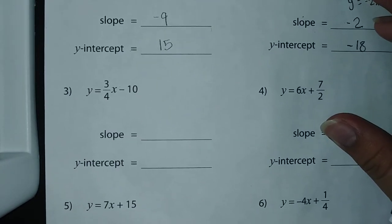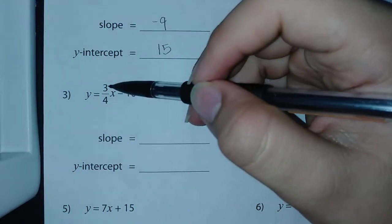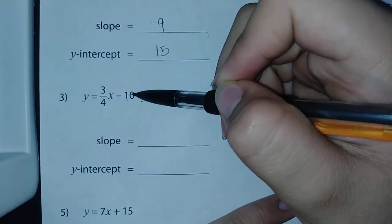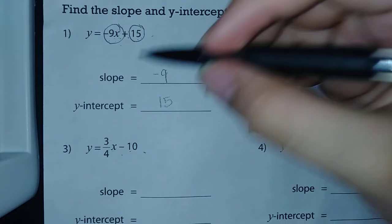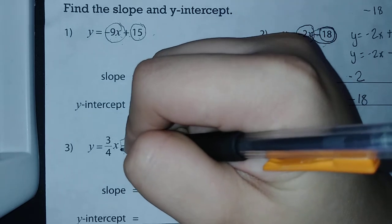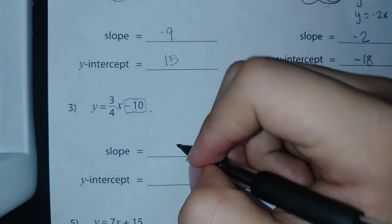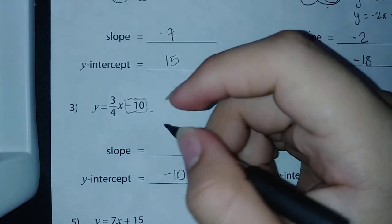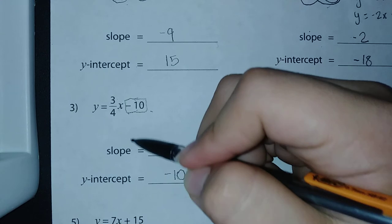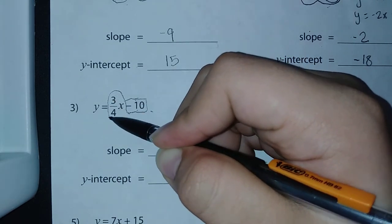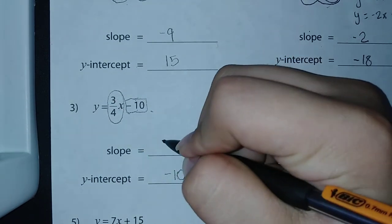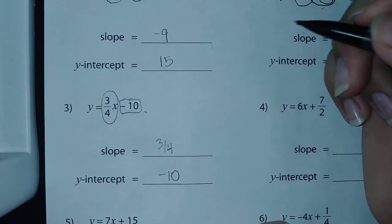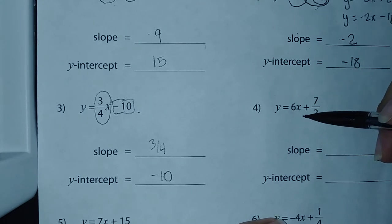Number three: y = (3/4)x - 10. Similar to the previous one, there's a minus sign here, so the y-intercept is going to be negative 10. Then for the slope we have (3/4)x, so our slope is 3/4.